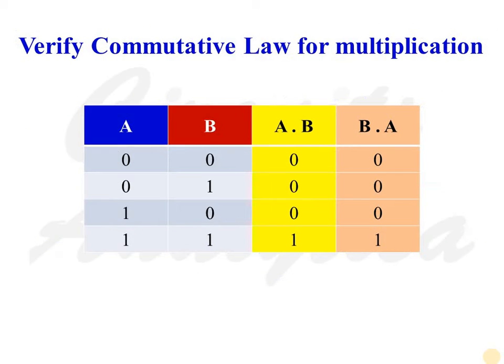Using this truth table, we can verify the commutative law for multiplication. The third column shows the result of A AND B, and the fourth column shows the result of B AND A. If we compare these two columns, we will find that the entries are the same — that means A AND B is equal to B AND A. When a variable A is ANDed with variable B, the result is the same as B ANDed with A.